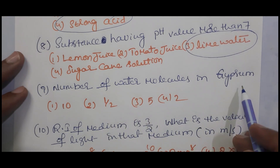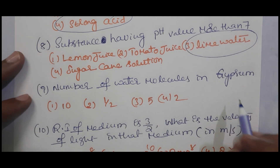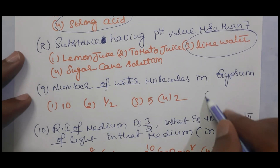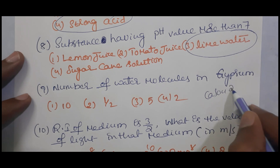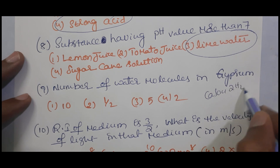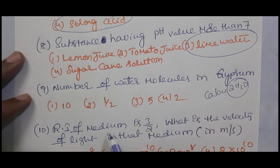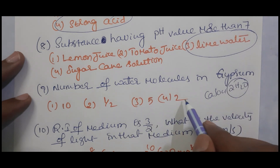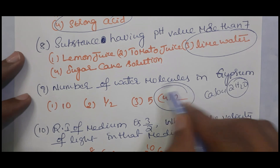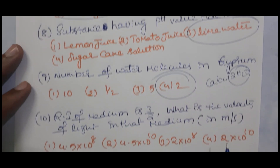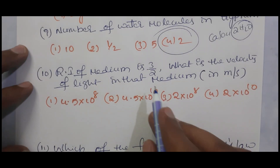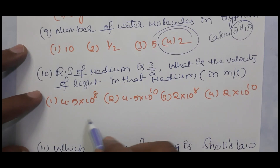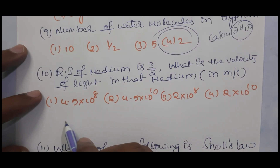Number of water molecules present in gypsum: the formula of gypsum is CaSO₄·2H₂O. So one molecule of gypsum has two molecules of water. The answer is 2.